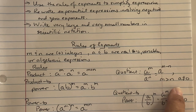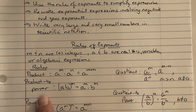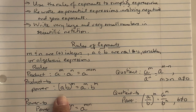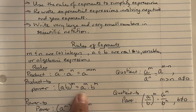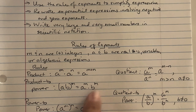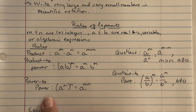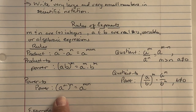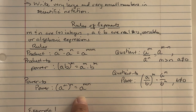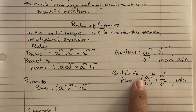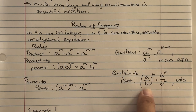The product-to-power rule: (ab) to the m power equals a to the m times b to the m. The power-to-a-power rule: (a to the m) raised to the n equals a to the m times n. The quotient-to-power rule: (a over b) to the m power equals a to the m over b to the m, where b does not equal zero.